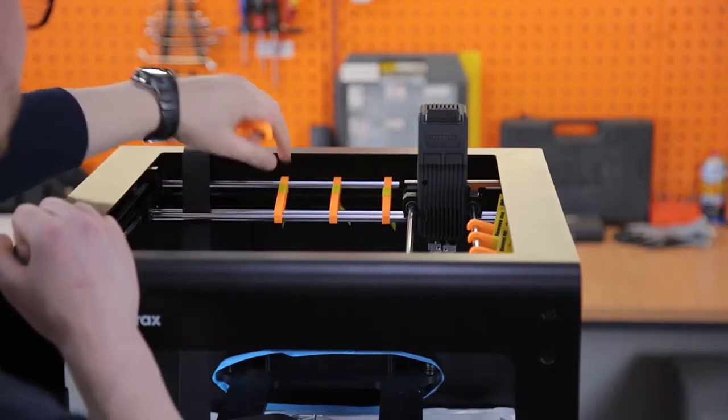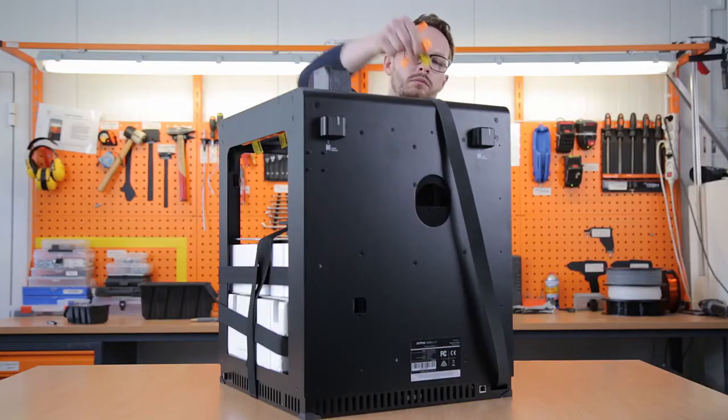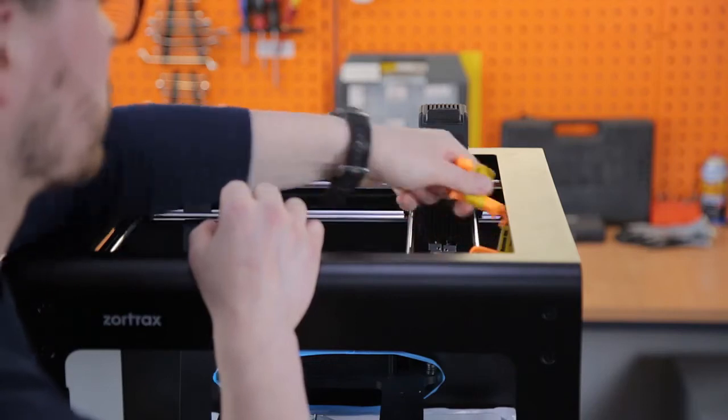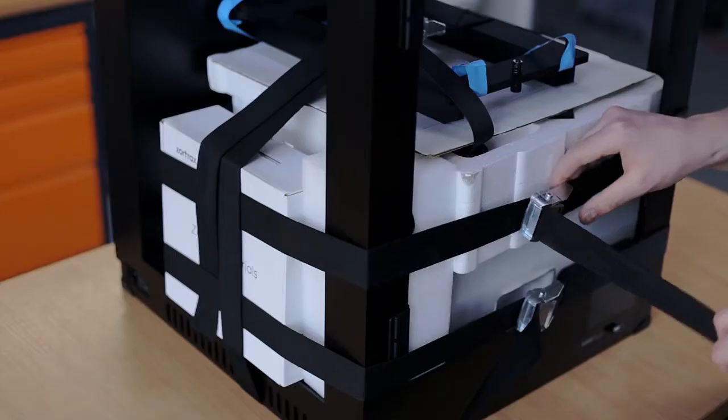Remove all the shipping clips that secure the rods of the printer. After that, you can remove the belt securing the foams with accessories.